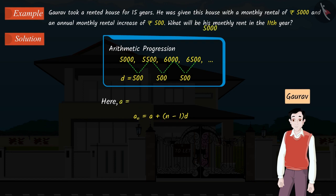Here, the first term A equals 5000, the common difference D is 500, and N equals 11.